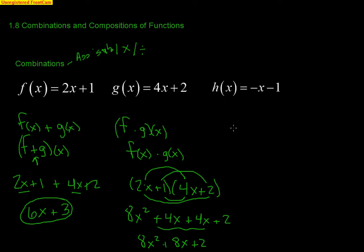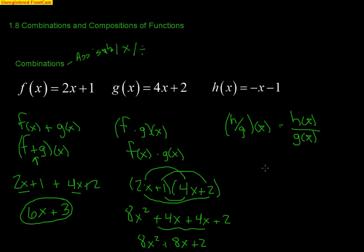We can make up any operation. Say we do h divided by g of x — all that means is you take h(x) and divide by g(x). So h(x) is negative x minus 1, divided by g(x) which is 4x+2, and that's our answer. There's nothing else to simplify. When you see that combination notation, don't make it harder than it is.